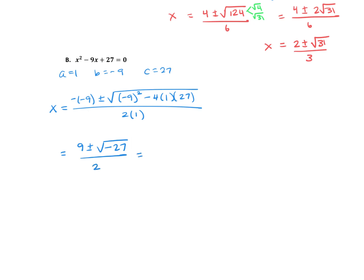We have a square root of a negative number, so we need to bring in an i so we can work with a positive number underneath the square root. So: 9 plus or minus i root 27 all over 2. Square root of 27 is not a perfect square, so we reduce it — we can break it down with square root of 9 times square root of 3. So we've got 9 plus or minus — square root of 9 is 3 — and the i goes with the square root of 3.